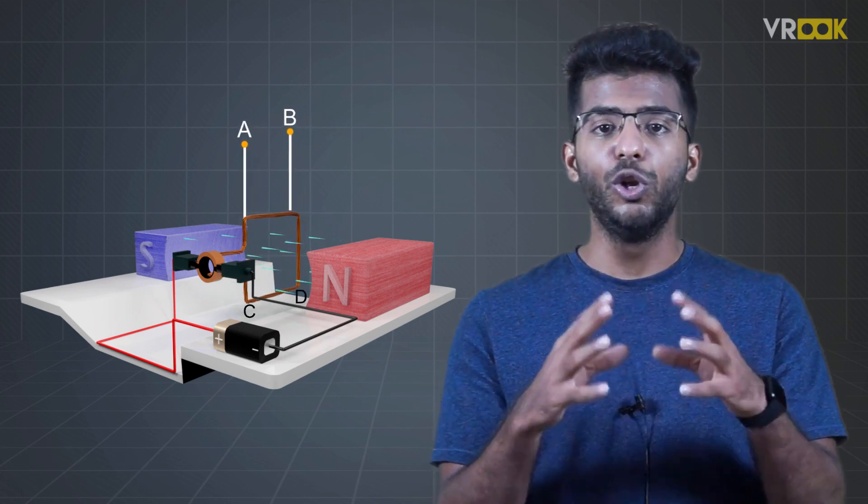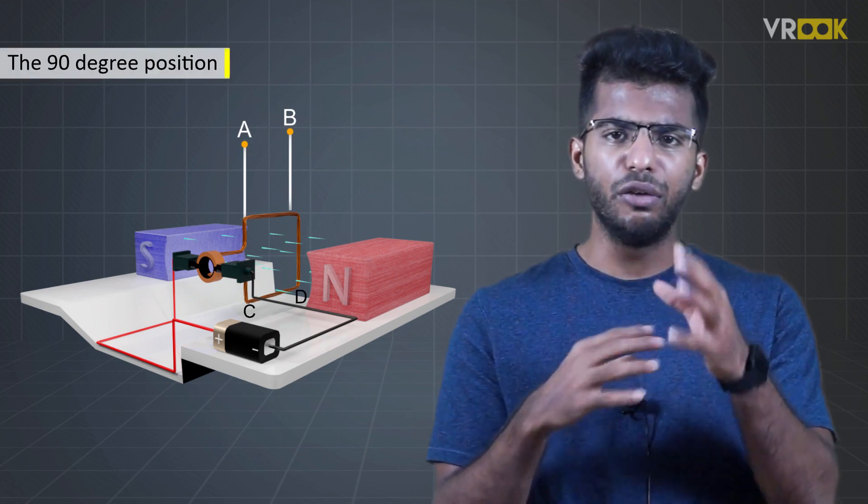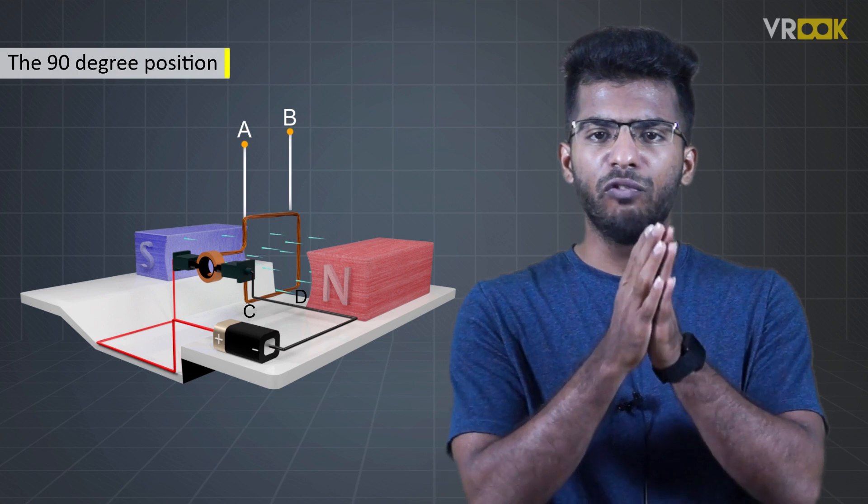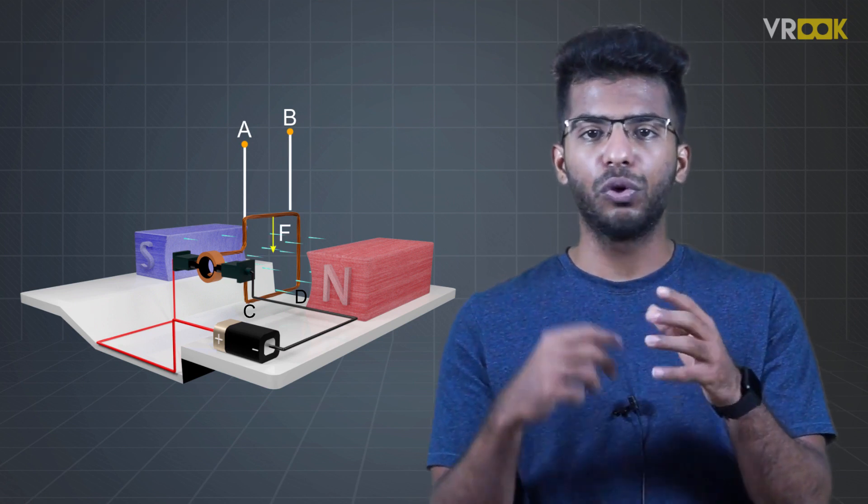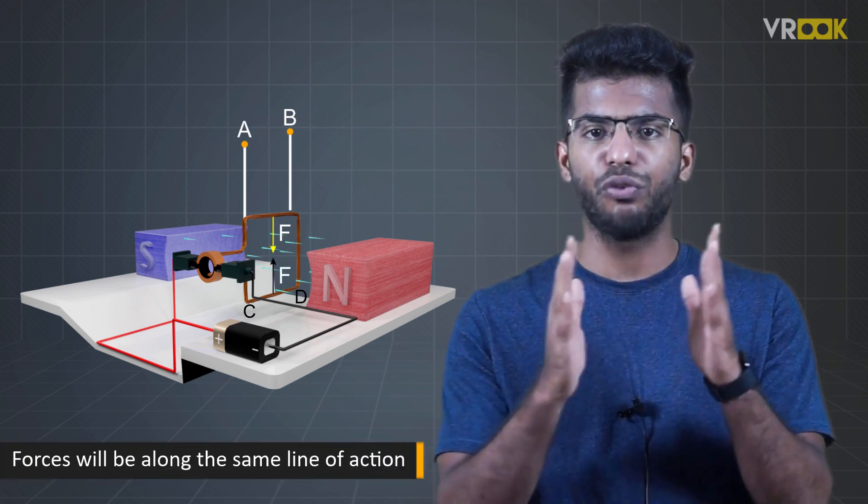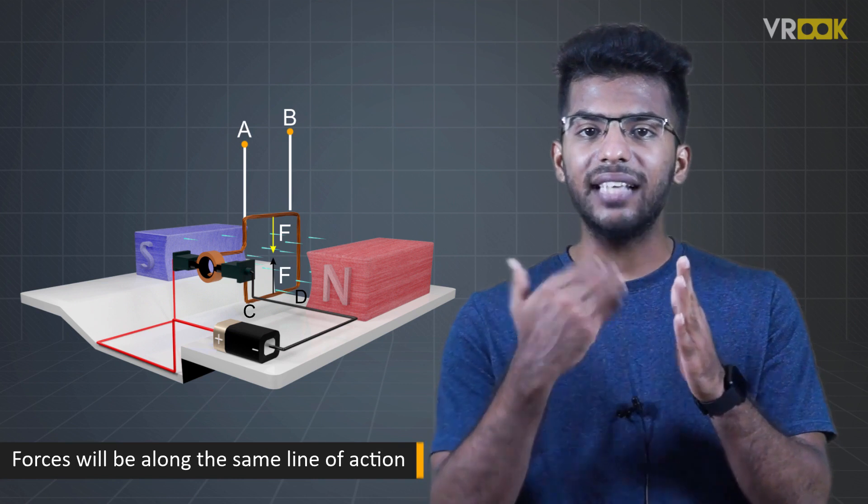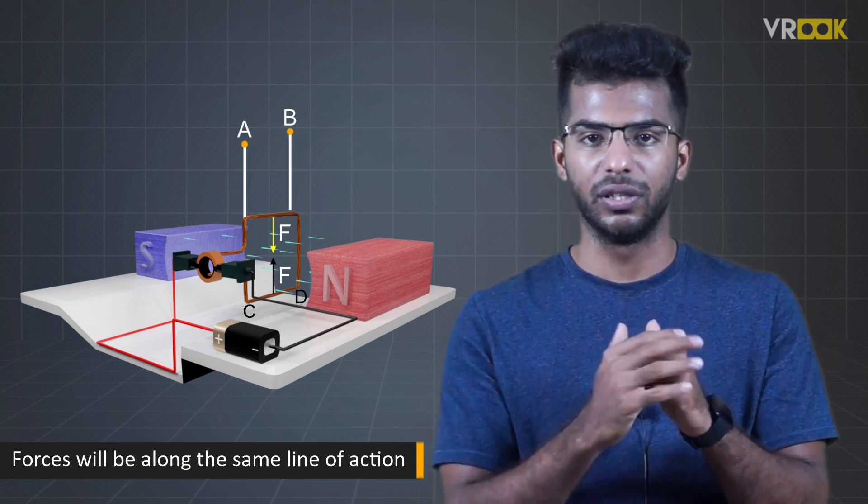Now, the loop has reached the 90 degree position. At this point, the forces acting on the conductors will be along the same line. Force on AB will be downwards and force on CD will be upwards. They'll be along the same line of action. So, they cancel each other and the loop will not move any further.